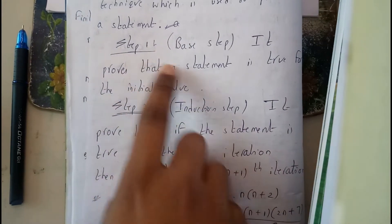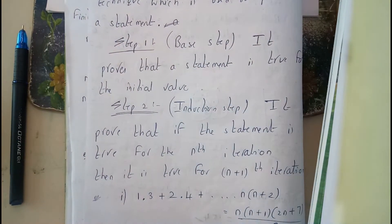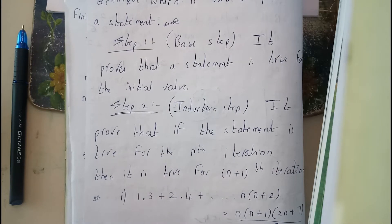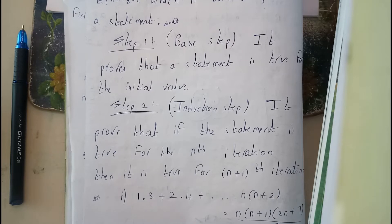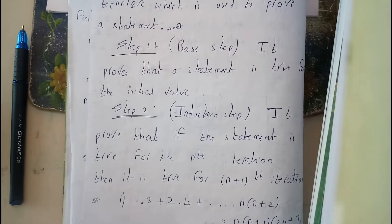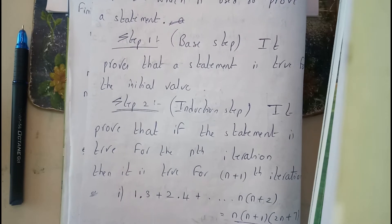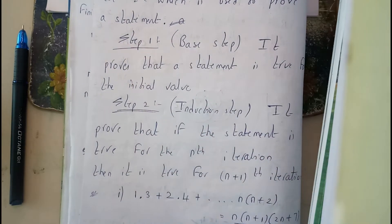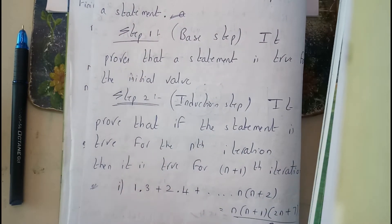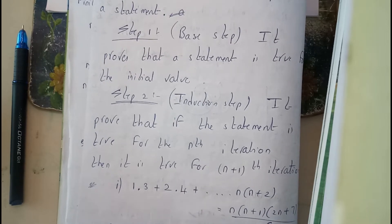Step one is the base condition — you substitute a small value like one or two as the initial value and check whether the statements are matching or not. Step two is the induction step, in which you find the nth term and the (n+1)th iteration and check whether they are the same. If they are the same, the statement follows mathematical induction; otherwise it does not.